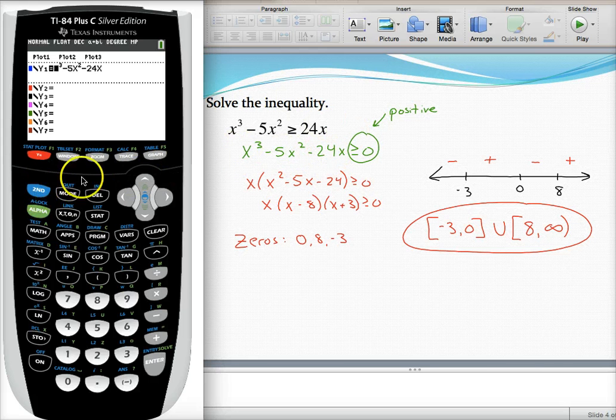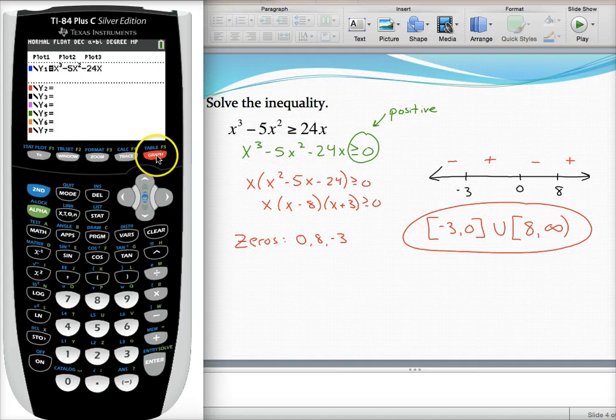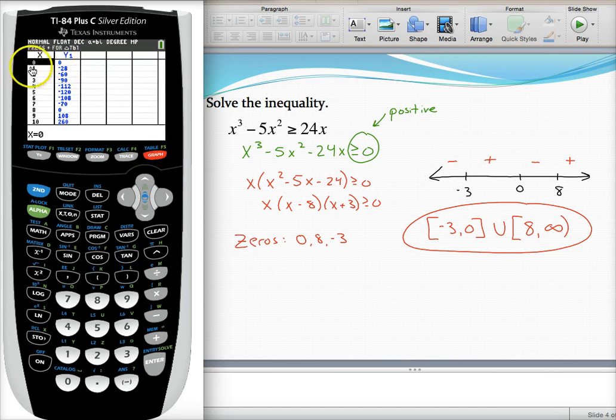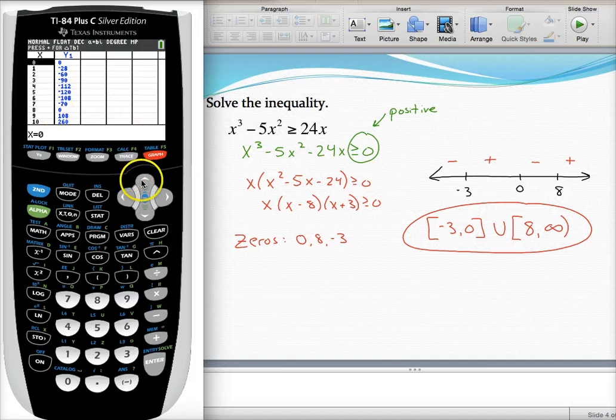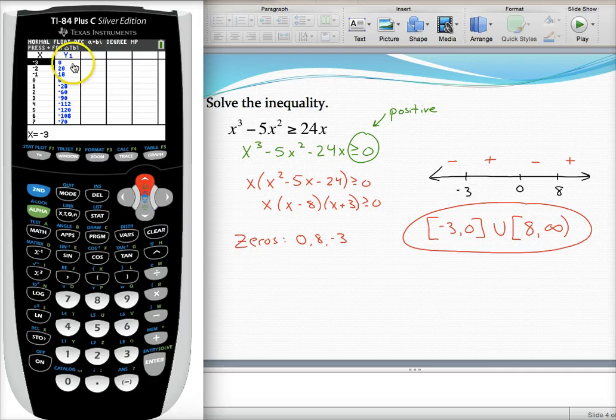So let me go ahead and go to my table just to show you how we could find our zeros. If I take a look, notice in the Y column, wherever Y is equal to zero, there's where my zeros are located. So zero is a zero, eight is also a zero, and if I scroll up to negative three, Y is zero, so negative three is a zero as well.